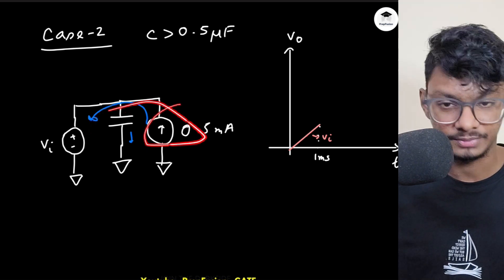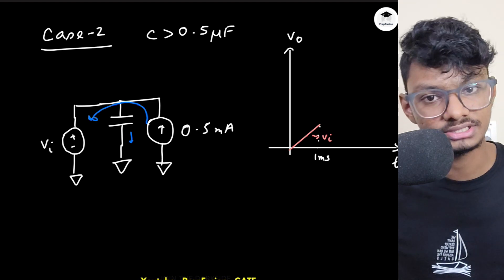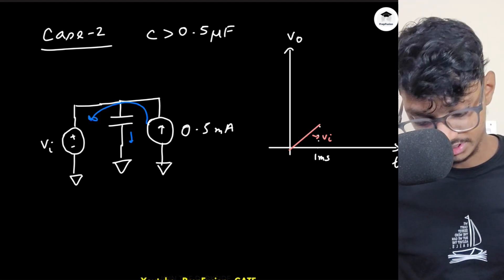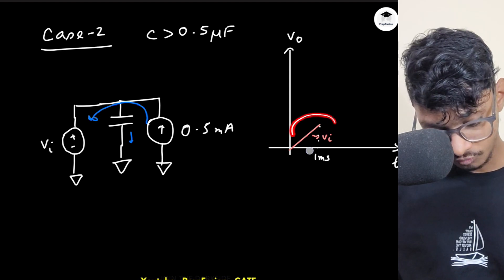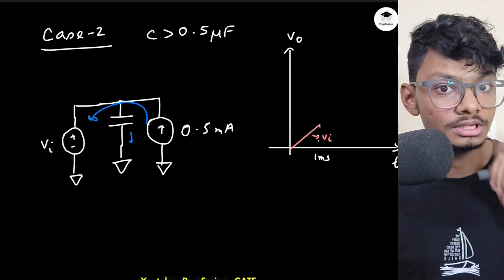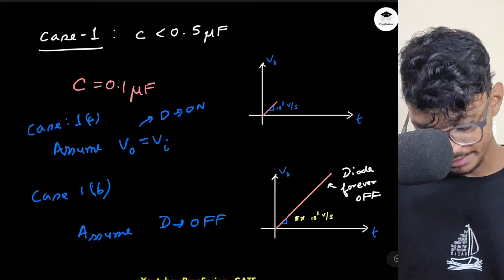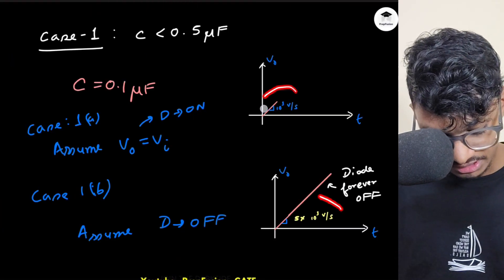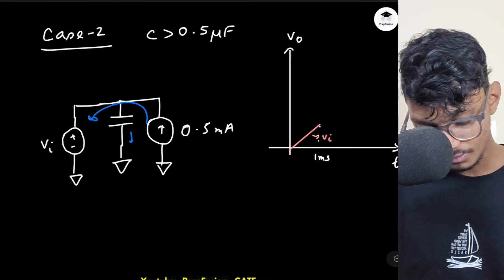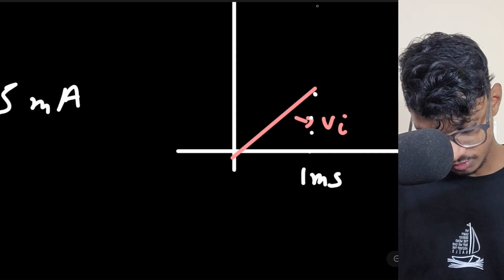The current source now has a path through the voltage source, so the capacitor current doesn't need to be 0.5 mA anymore. To find the capacitor current I know the voltage, and the slope of that voltage gives me the current. The slope from 0 to 1ms is 10³ V/s — the same as before when the diode was on.